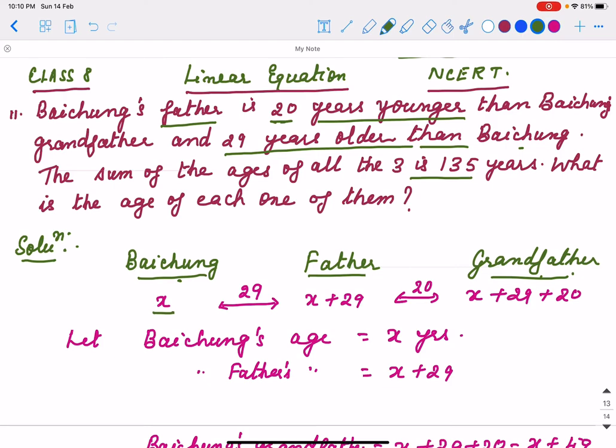Baichung's father is 20 years younger than his grandfather. That means age difference is 20 years. Grandfather is the eldest one, older than his father. So 20 years difference is there. Now what is the age difference between Baichung and his father? 29 years older than Baichung. Father is 29 years older. So there is age difference of 29.